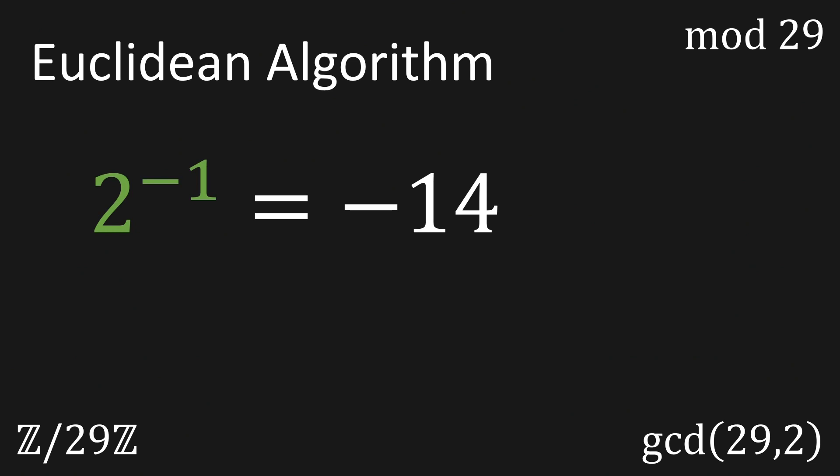You can check this result by simply calculating 2 times minus 14 modulo 29 which gives you 1. So this answer is correct.